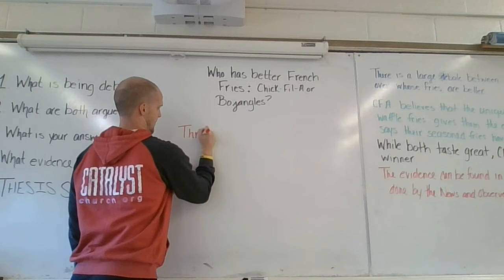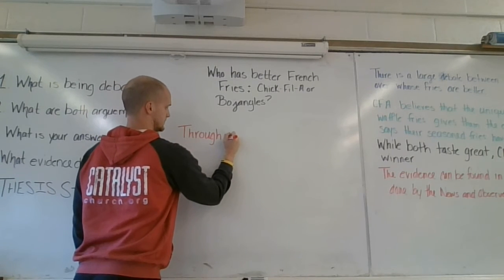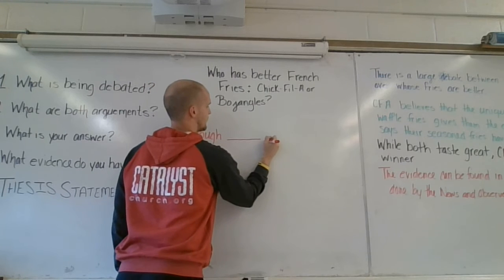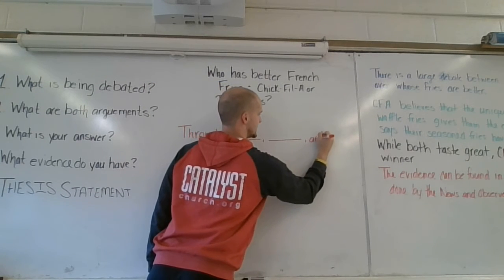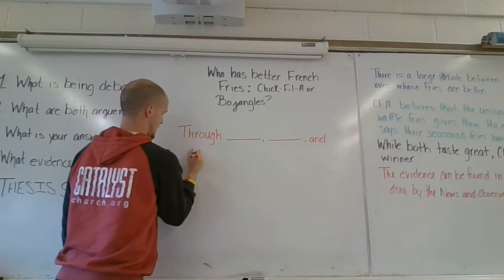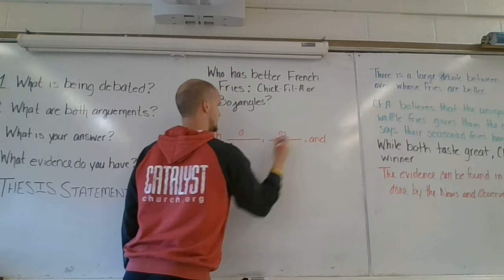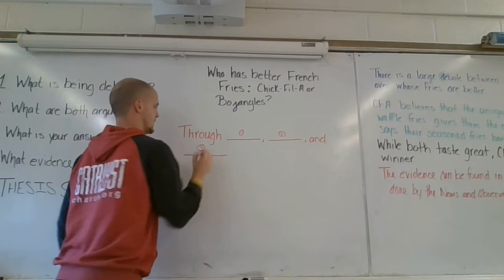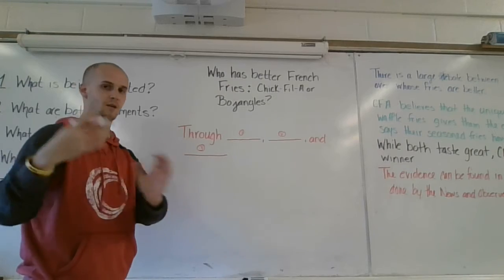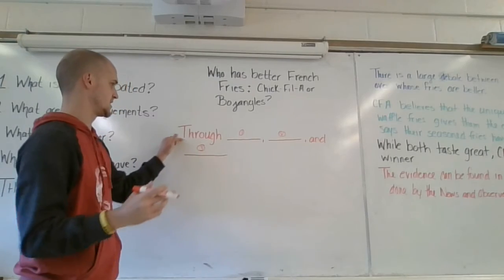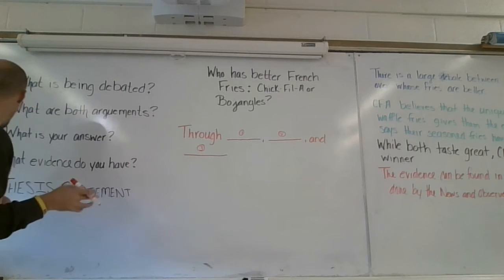The structure is: 'Through [reason one], [reason two], and [reason three]...' You give three reasons. You can also say 'by explaining one, two, and three' — whichever. Just an introduction phrase and then three reasons. So: 'through blank, blank, and blank,' followed by your answer.